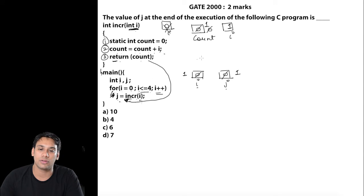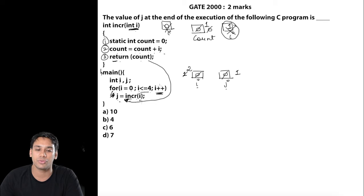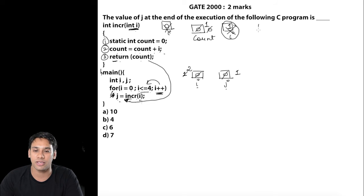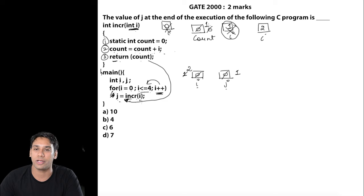The local variable i in INCR was destroyed. Back in main, i is incremented to 2. We check: 2 is less than or equal to 4 — true. We execute INCR again, passing i = 2. In statement 2: count = count + i = 1 + 2 = 3. It returns count, which is 3, so j now stores 3.